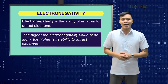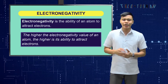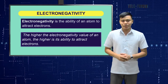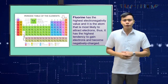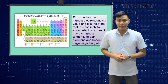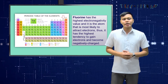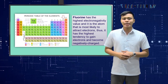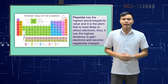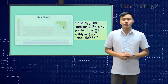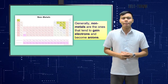Electronegativity, on the other hand, is the ability of an atom to attract electrons. Just remember that the higher the electronegativity value of an atom, the higher its ability to attract electrons. In period 2 of the periodic table, fluorine is located at the rightmost part of the row. Hence, fluorine has the highest electronegativity value and is most likely to attract electrons. Thus, it has the highest tendency to gain electrons and become negatively charged. Generally, non-metals are the ones that tend to gain electrons and become anions.